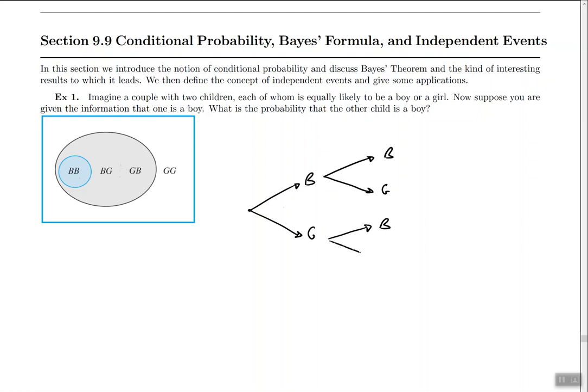And everything happens in equal likelihood so that means all the children can be born with 50% chance.